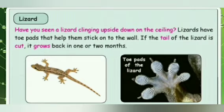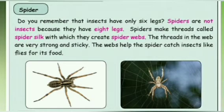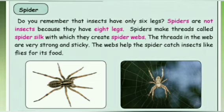Lizards have toe pads which help them stick on the wall very easily. The special feature of a lizard is that if its tail is cut, it grows back in one or two months. Spiders usually make a thread-like substance called spider silk, which they use to create spider webs. The threads of the web are very strong and sticky, and the web helps them catch flies as food.